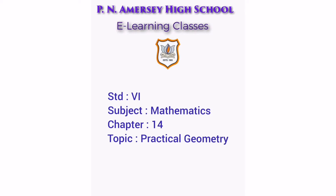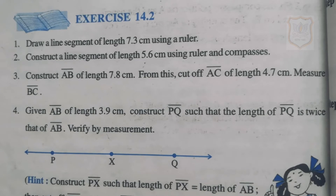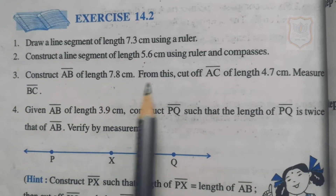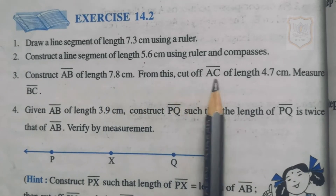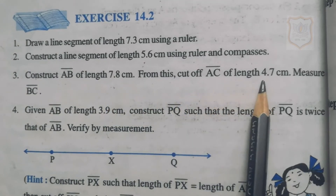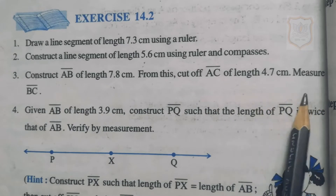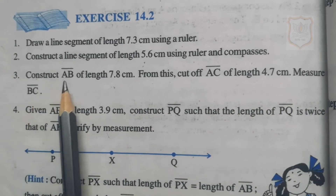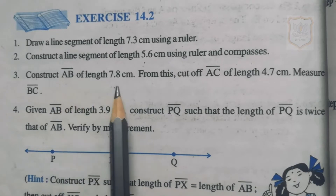Hello students, welcome to e-classes of PNR Mersey High School. We will continue with Chapter 14, Practical Geometry, Exercise 14.2, Question 3: Construct line segment AB of length 7.8 centimeter. From this, cut off line segment AC of length 4.7 centimeter. Measure line segment BC.